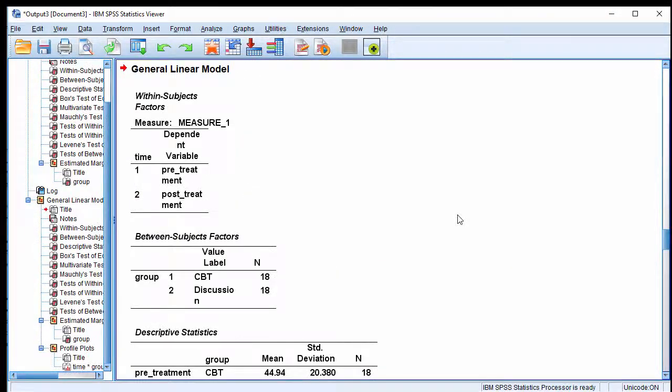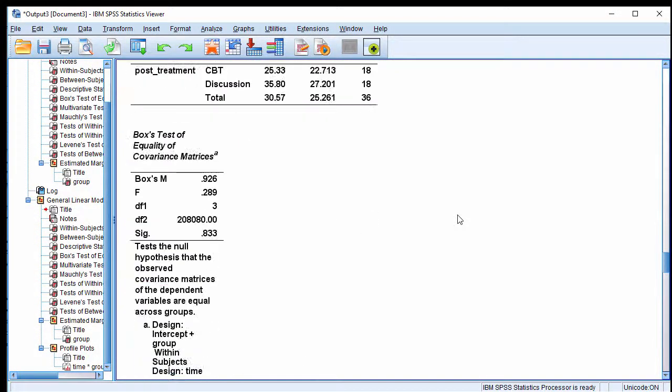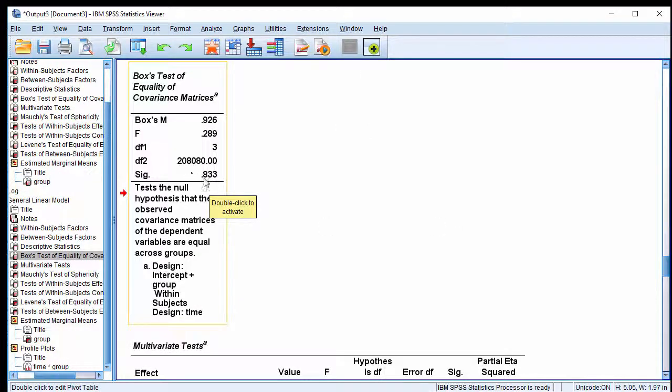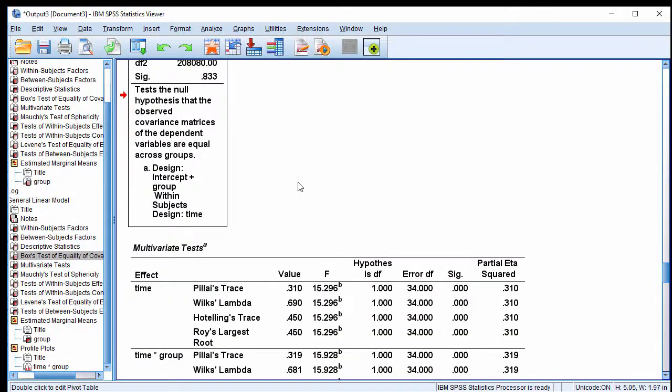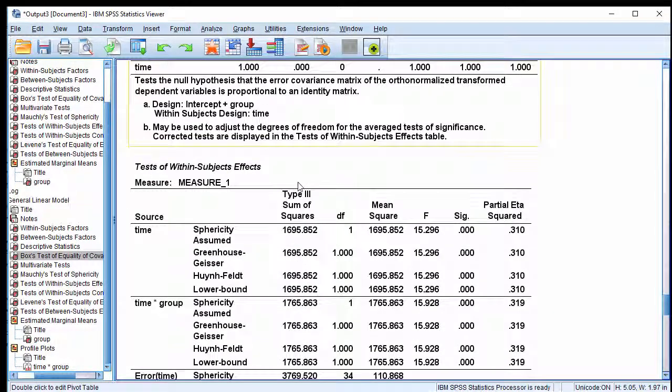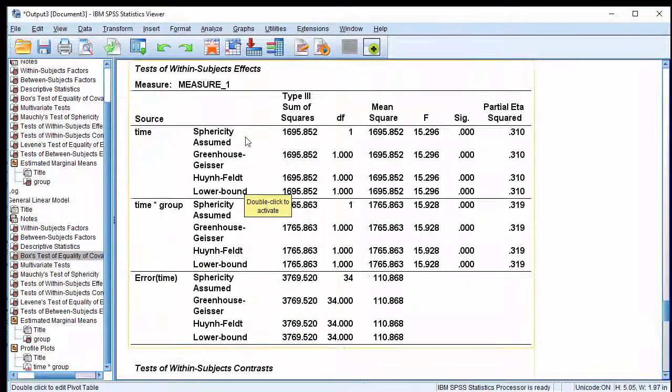That's running the 2x2 mixed design ANOVA as a follow-up. The assumption of equality of covariance matrices is satisfied because the p-value is greater than .05, or greater than .005 if you trust Huberty and Petoskey. Now go down to the tests of within-subjects effects, and you can see the time by group effect was identified as statistically significant. F equals 15.93, p less than .001, and a partial eta squared of .319.